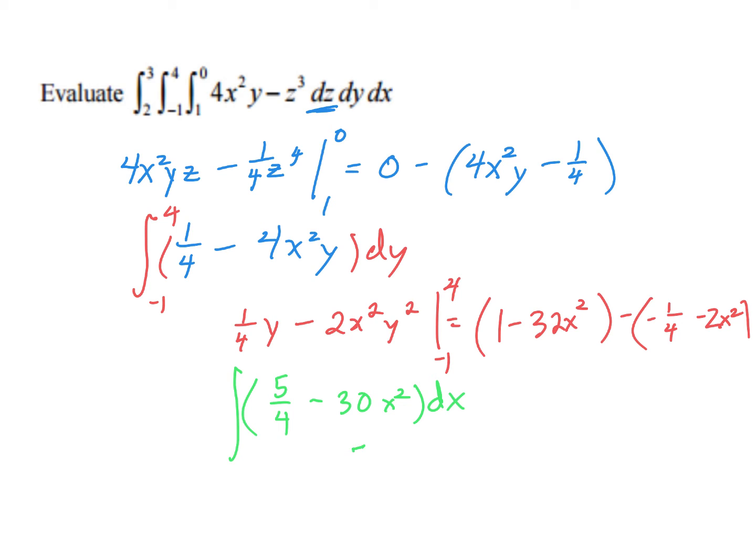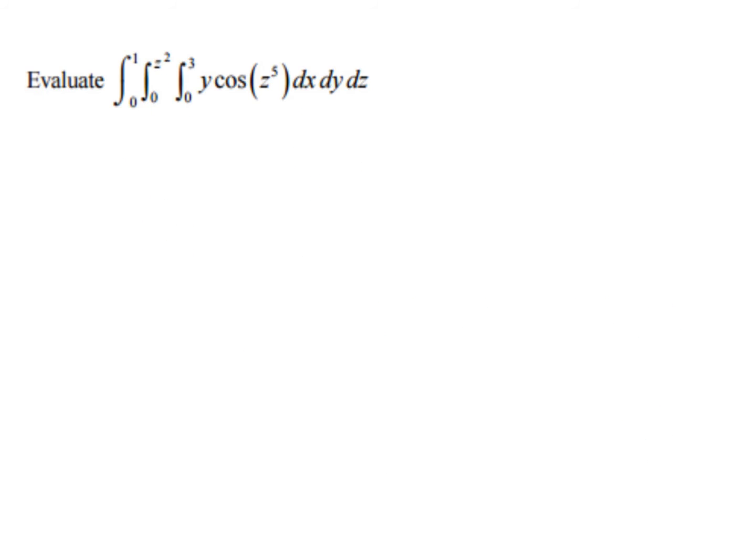So I'm going to have 5/4 x minus 10x³. Evaluated at 3 and 2. Which, if you calculate that out, it's going to be negative 755 over 4.